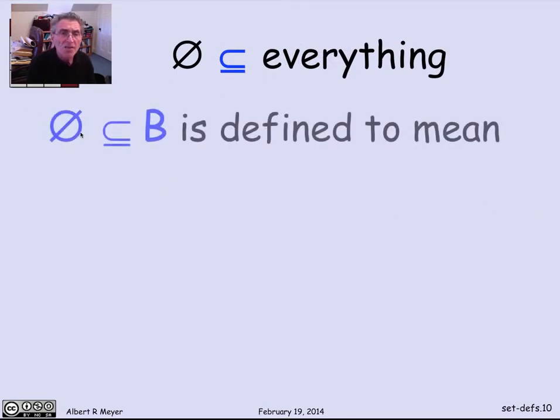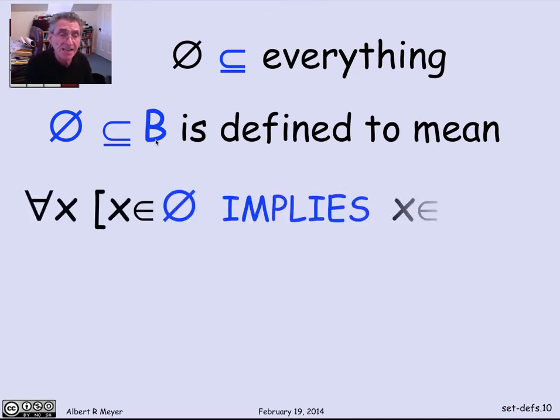So the claim is that the empty set is a subset of everything. Let B be any old set. Then the empty set is a subset of B. What exactly does that mean according to the definition of subset? Well, it says that everything that's in the empty set, if it's in the empty set, then it implies that it's in B. For every element, if it's in the empty set, then it's in B.